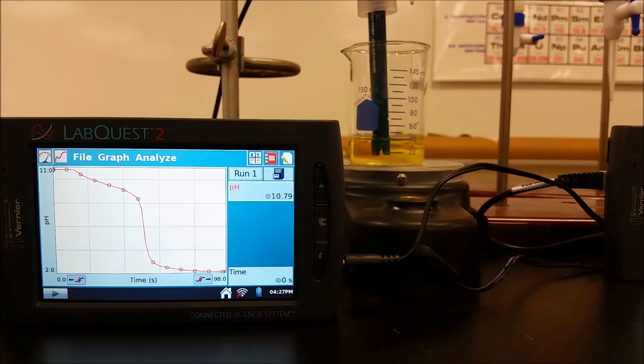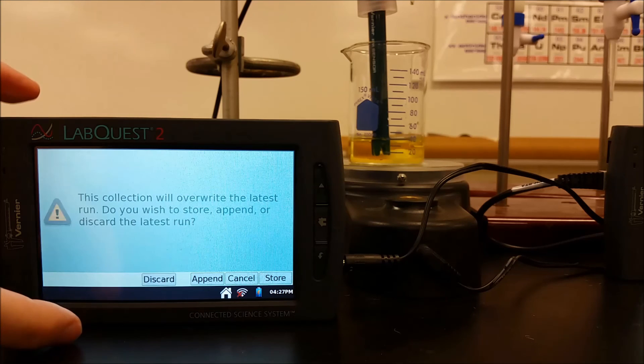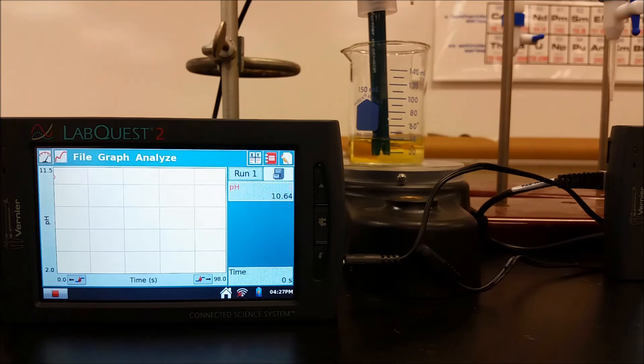So we have our 0.1 molar ammonia. It's been diluted with some distilled water. And now we're going to add the hydrochloric acid to it that's 0.1 molar as well. And I'm going to run the pH meter here to give us our titration curve. This time when we run it, this is going to work where the equivalence point and the endpoint should be about the same.